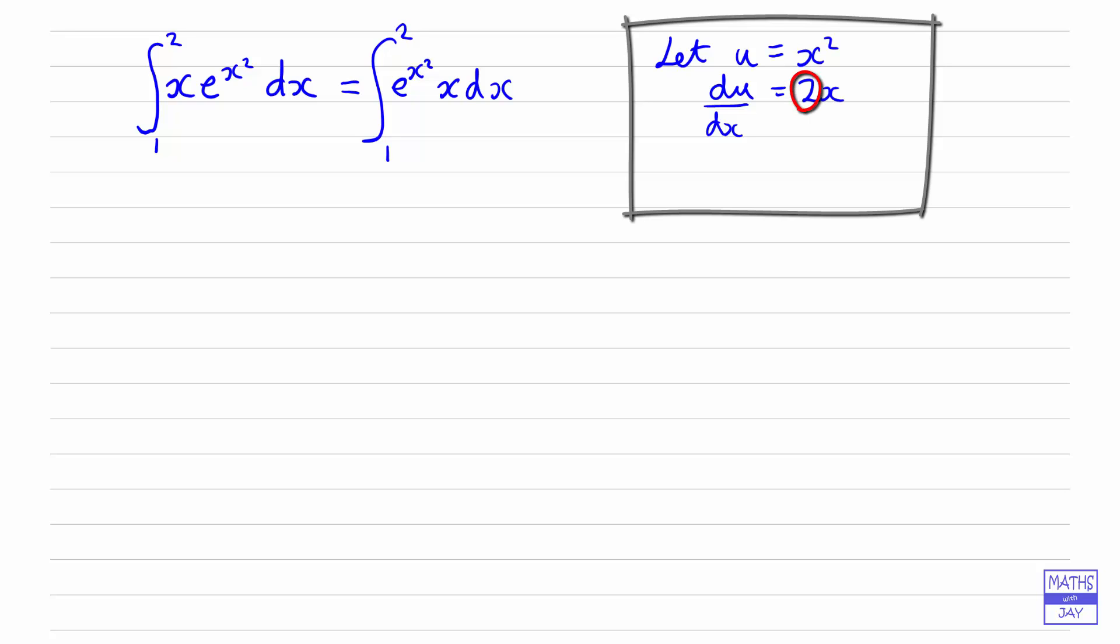If we divide both sides by 2 and effectively multiply across by the dx, well it's not really that, but we are saying that these kinds of things will be equivalent when we integrate. So we're saying we can replace the x dx by half du.